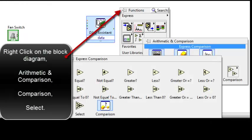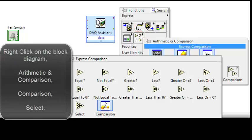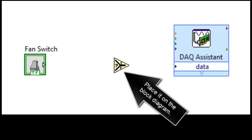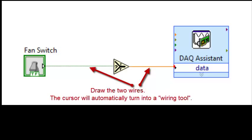Right click on the block diagram. Select arithmetic and comparison, then comparison, then select. Place it on the block diagram. Draw the two wires. The cursor will automatically turn into a wiring tool.